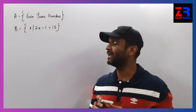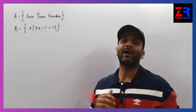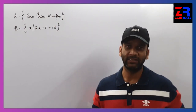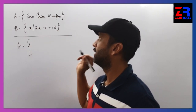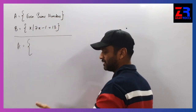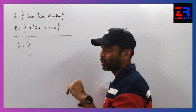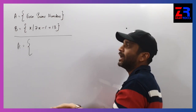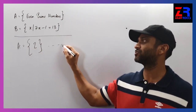Question number 2: decide whether A and B are equal sets and justify your answer. Set A is the set of even prime numbers. Even numbers are 2, 4, 6, 8, 10. Prime numbers are those divisible only by themselves and by 1. The number which is both even and prime is 2. So set A equals {2}.